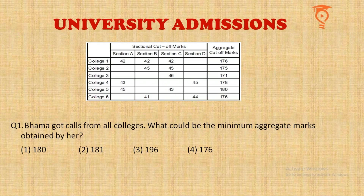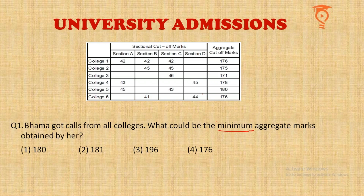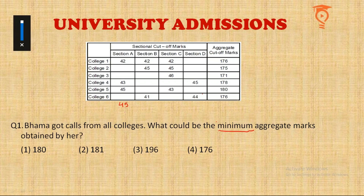In questions like these, where only some information is given, a minimum-maxima approach is used. This question asks: Bhama got calls from all colleges — what is the minimum aggregate? We want her to score as few marks as possible and still get calls from all colleges. In section A, the cutoff is required by three colleges and the maximum among them is 45 (College 5). So Bhama must get exactly 45 in section A — scoring 44 would mean rejection by College 5. Similarly, in section B, the maximum cutoff among the three colleges requiring it is also 45.